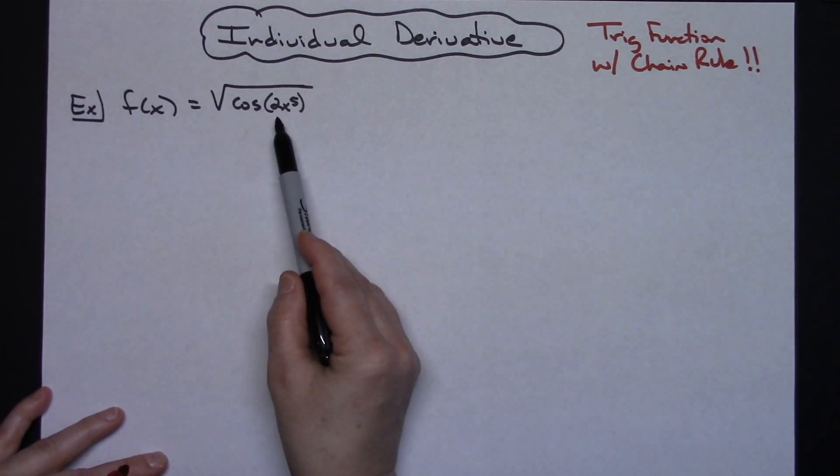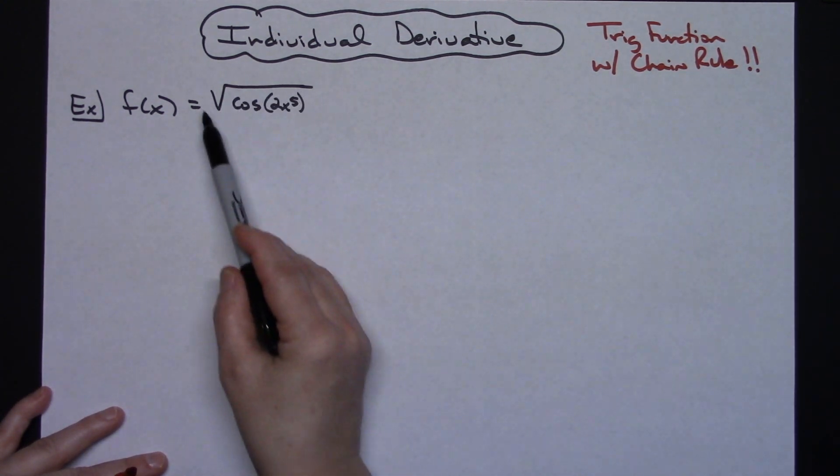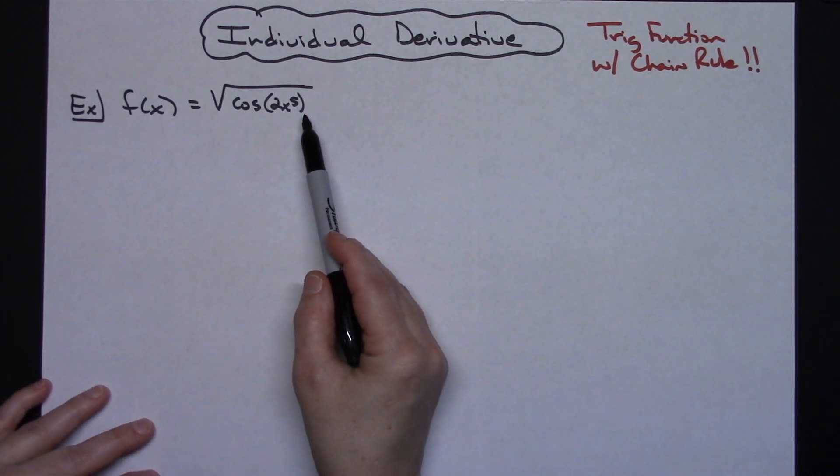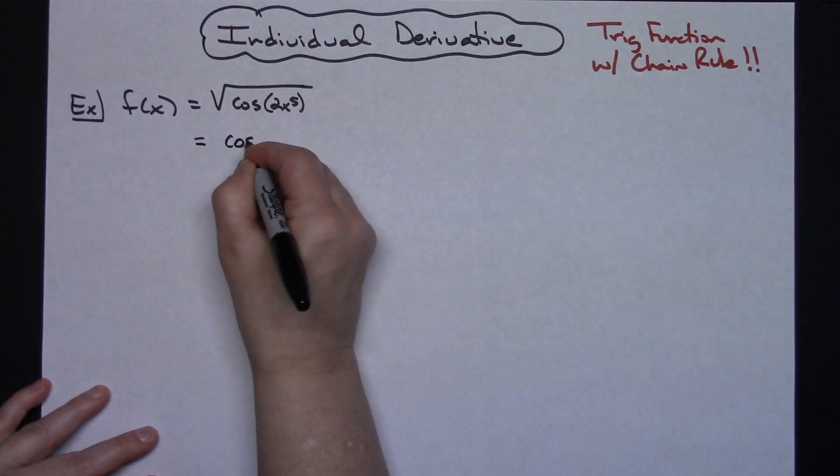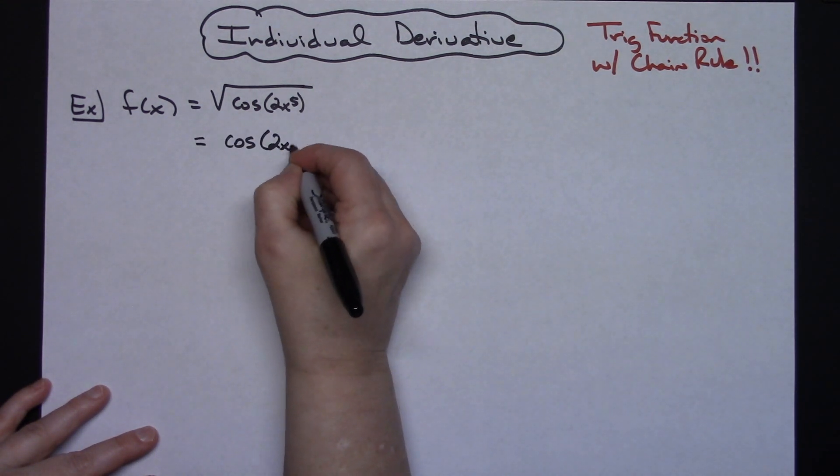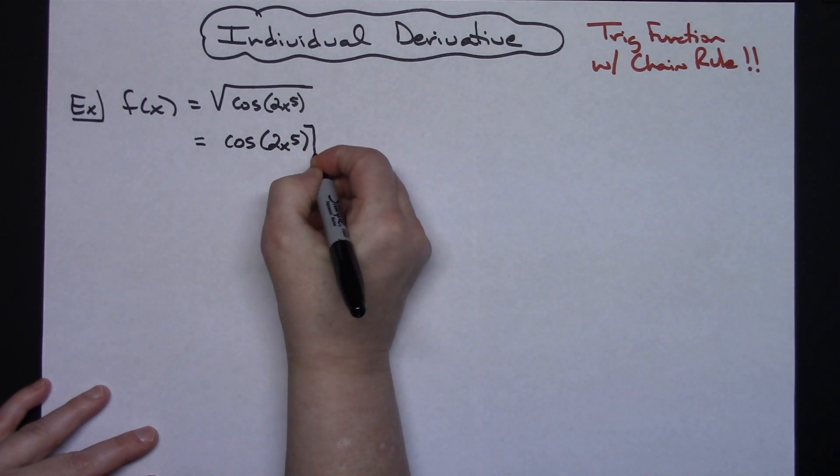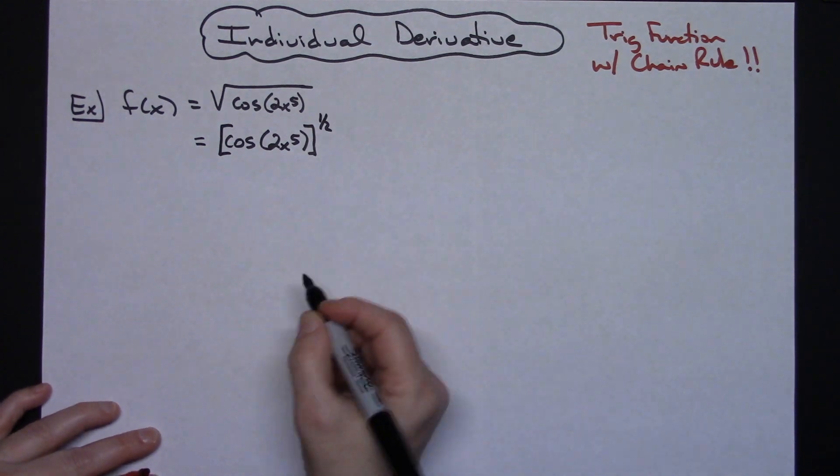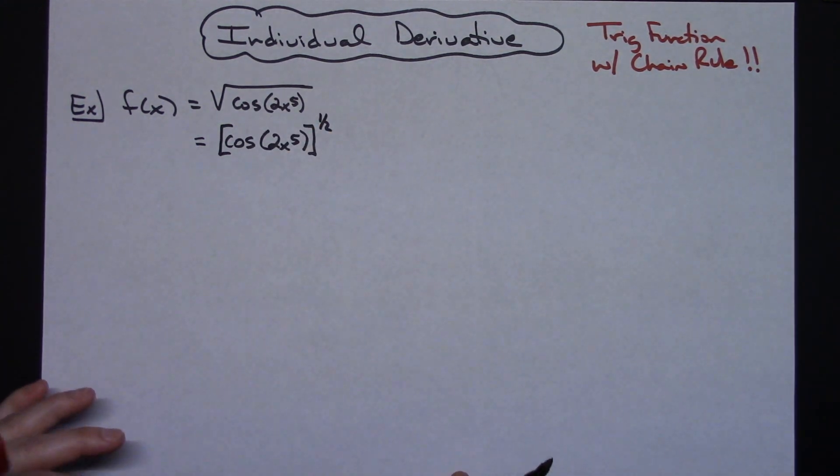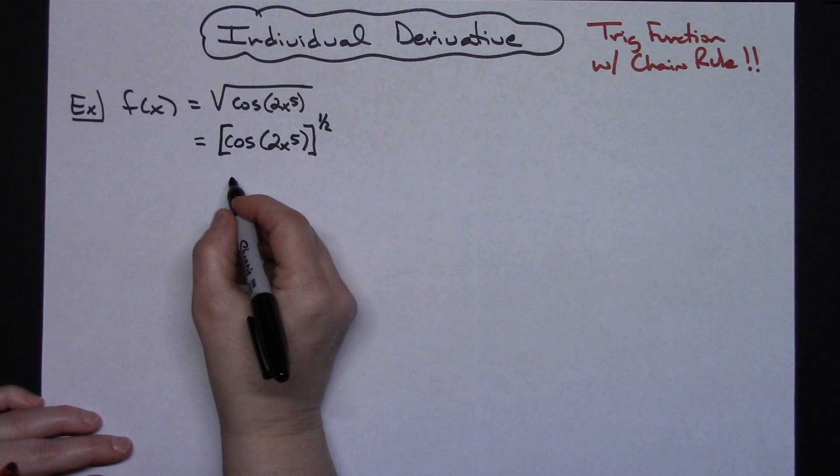This is my original function right here. What I want to do before I even start taking the derivative is I want to be able to see all my exponents real clearly. So I'm going to take this radical and rewrite it in exponential form. I'm going to have cosine of 2x to the fifth and then that's going to be raised to the 1 half power. So from there to there I'm doing no calculus whatsoever, just strictly rewriting that function.